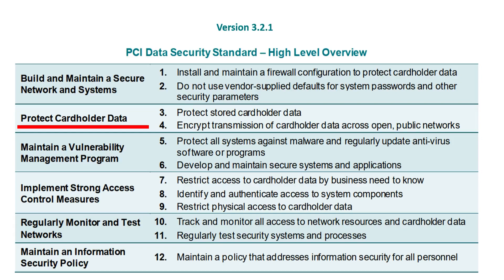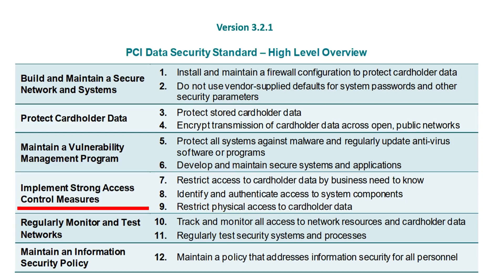Domain 2: Protect Cardholder Data. Within Domain 2 we have Requirement 3: Protect stored cardholder data, and Requirement 4: Encrypt transmission of cardholder data across open public networks. Domain 3: Maintain a Vulnerability Management Program. Within Domain 3 we have Requirement 5: Protect all systems against malware and regularly update antivirus software or programs, and Requirement 6: Develop and maintain secure systems and applications.